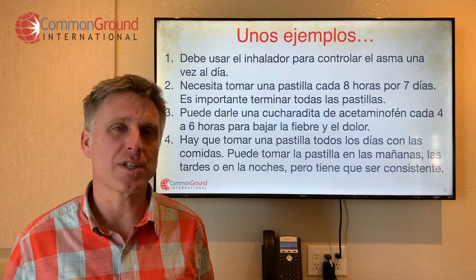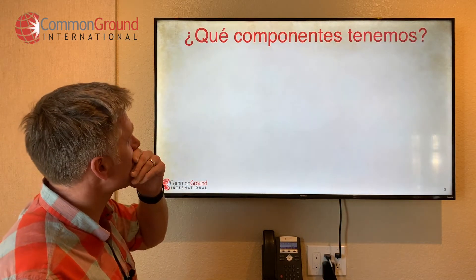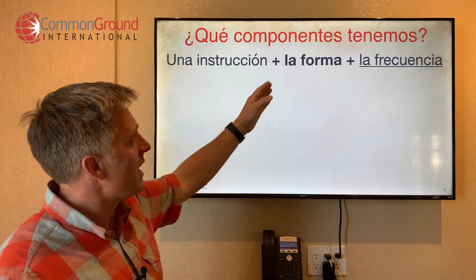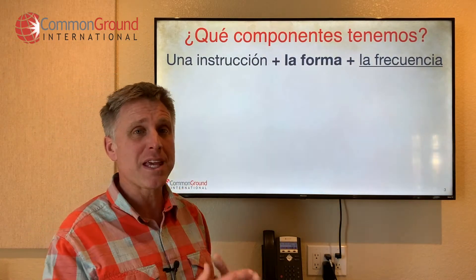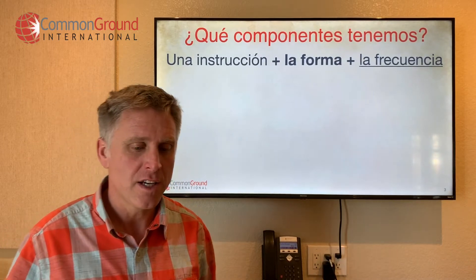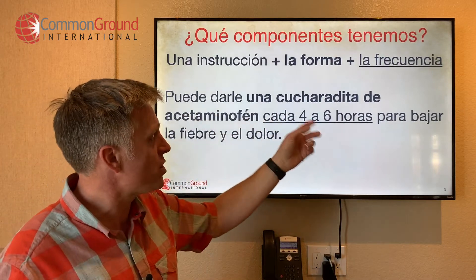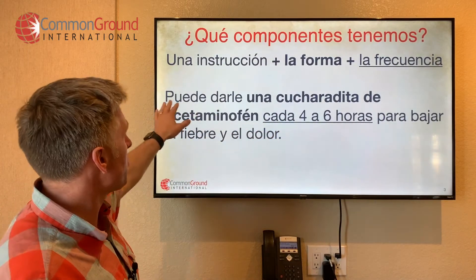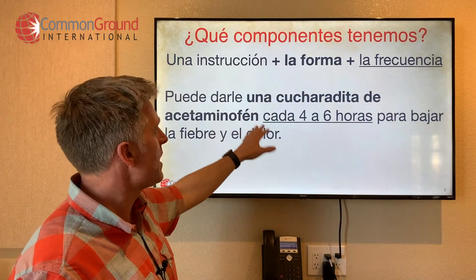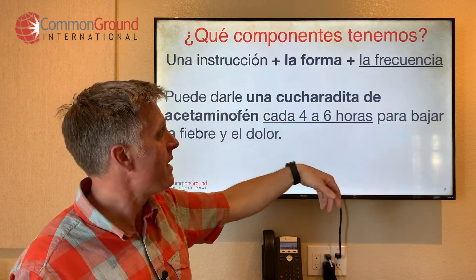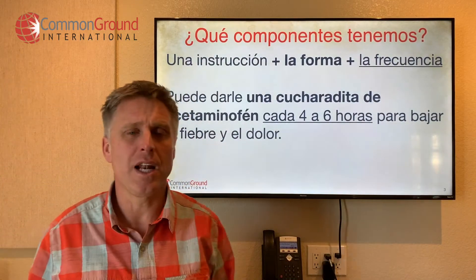What are the components we have here in estas frases? First of all, we've got una instrucción, la forma, and then la frecuencia. Un ejemplo: Puede darle una cucharadita de acetaminofen — puede darle, that's your instrucción. Una cucharadita de acetaminofen — that's la forma. Cada cuatro a seis horas — that's la frecuencia. And then para — para is a great word to talk about 'in order to.' Para bajar la fiebre y el dolor.